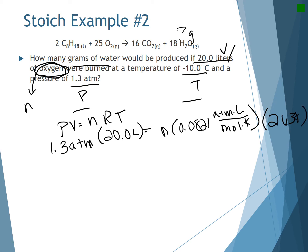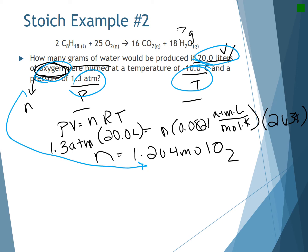So now solving for my N, I get N equals 1.204 moles of oxygen. So for these conditions, I know that I have 1.204 moles of oxygen. But that's not what I asked. What I asked is, with these conditions for oxygen, how many grams of water would be produced? So now I'm ready to do my stoichiometry.